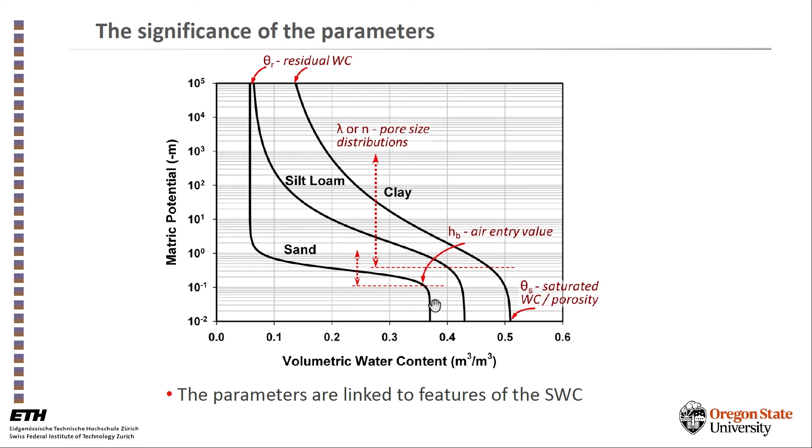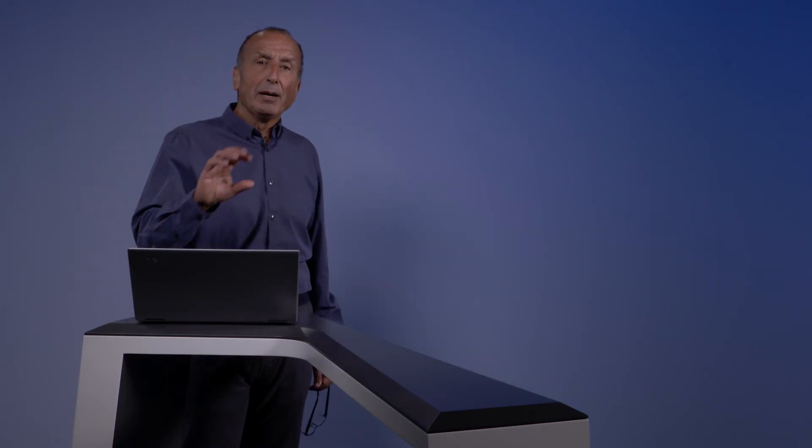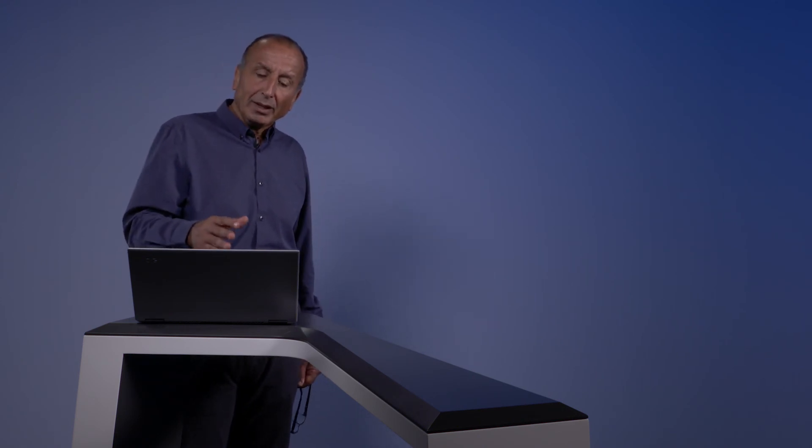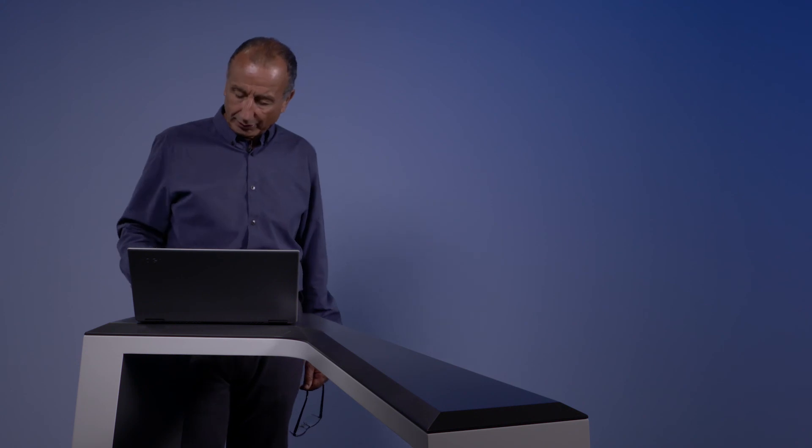You'll see that there is a bend in this characteristic curve, especially here for sand, which marks the air entry value. The soil remains saturated nearly up to that point and then it becomes desaturated. The rate by which the soil desaturates as a function of matric potential is related to the pore size distribution and it is captured by the parameter lambda in the Brooks and Corey or by the parameter n in the van Genuchten model. This is basically the link between the parameters in this parametric model and the soil-water characteristic curve.